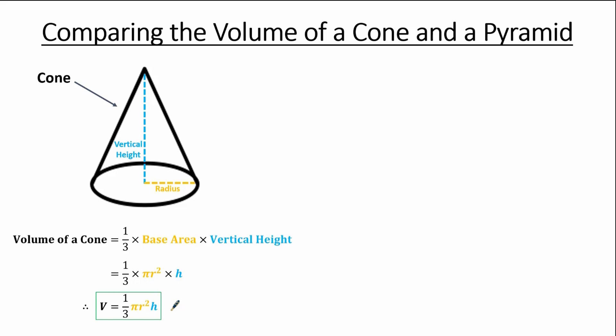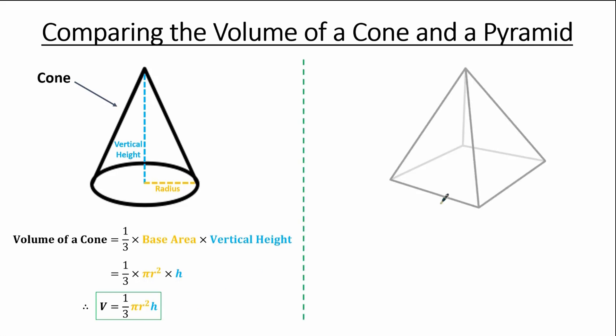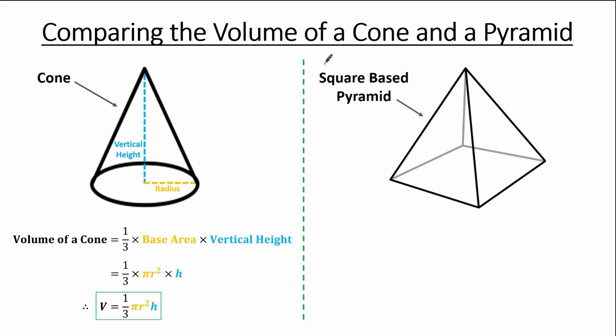Moving on, let's look at the volume of a pyramid. We're going to look at the square base pyramid, where the base is a square. The approach for finding the volume of a pyramid is going to be the same regardless of the base, but we will just look at the square base pyramid for now.